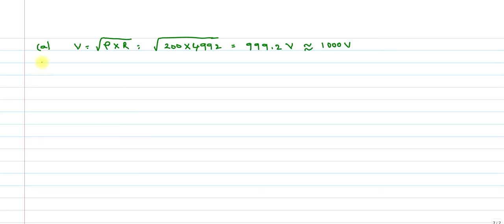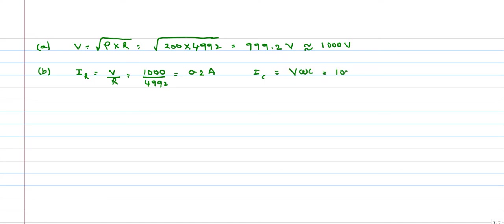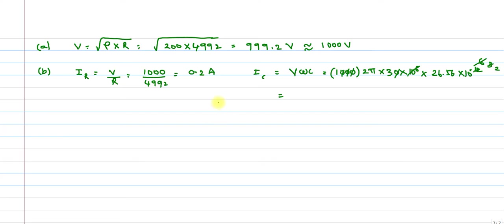For part (b), finding the currents: current through resistance Iᵣ = V/R = 1000/4992 ≈ 0.2 amperes. Current through capacitor Ic = V·ω·C = 1000 × 2π × 30×10⁶ × 26.56×10⁻¹² ≈ 5 amperes.